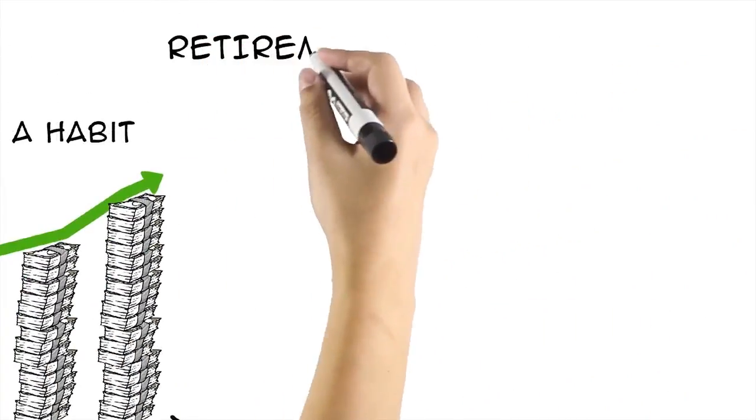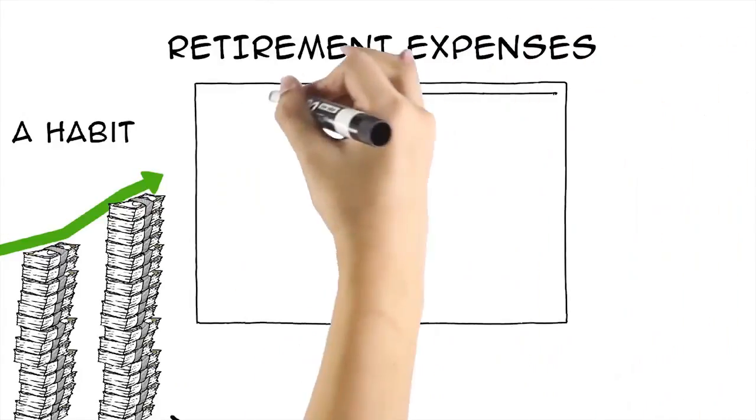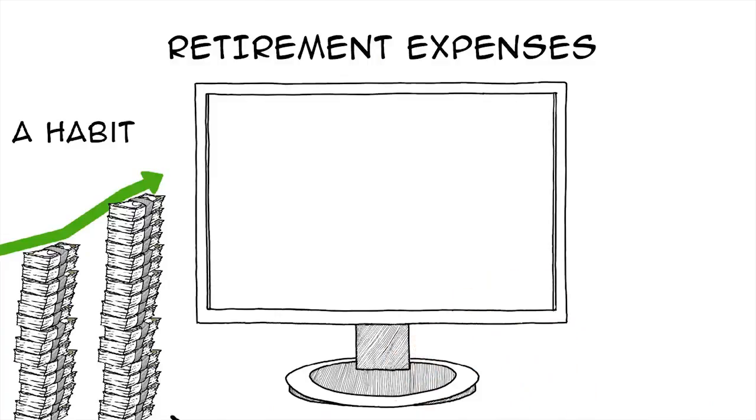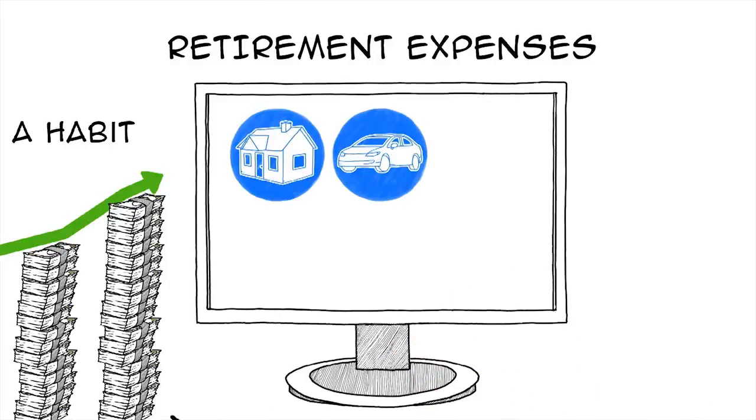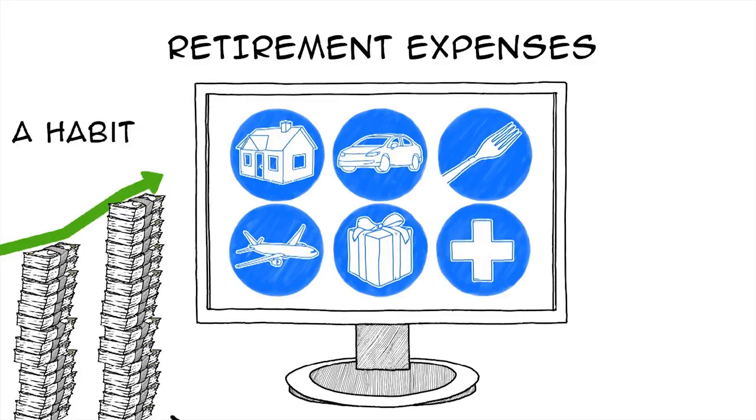Know your retirement expenses. Figure you will want at least 70% of your pre-retirement income to live comfortably. Knowing what you need is the first step to getting what you need. The key to a secure retirement is to have a goal.